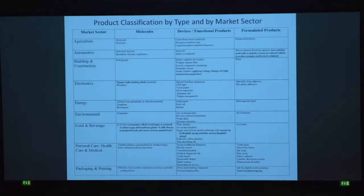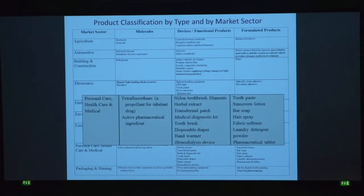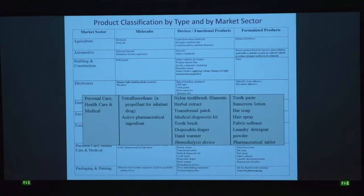We approach these consumer-centered products by classifying them in different market sectors: agriculture, automotive, building and construction, electronics, and so on. For personal care, healthcare, and medical products, we have APIs; for devices, we have medical diagnostic kits, dialysis devices; and functional products such as transdermal patches, toothbrushes, and disposable diapers. For formulated products we have sunscreen lotion, hair spray, and fabric softener.